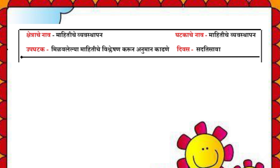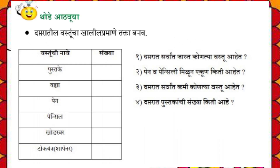Now let's do Math. Topic: data organization. Sub-topic: analyzing collected data and drawing conclusions. Make a table of items in your school bag — items and their quantities: Books 5, Notebooks 2, Pen 2, Pencil 2, Eraser 1, Sharpener 1. Answer the questions based on this.